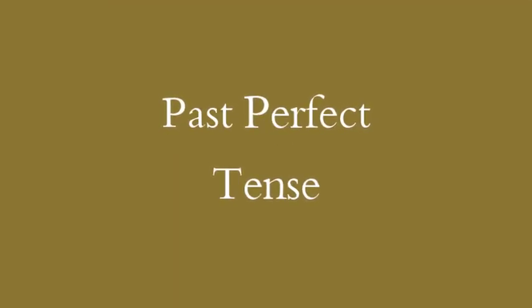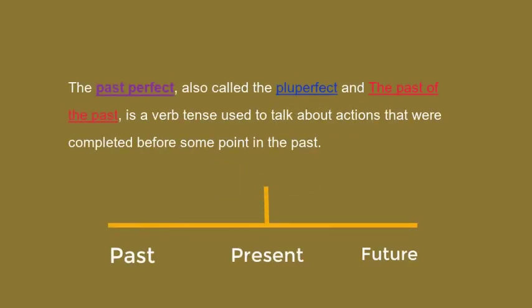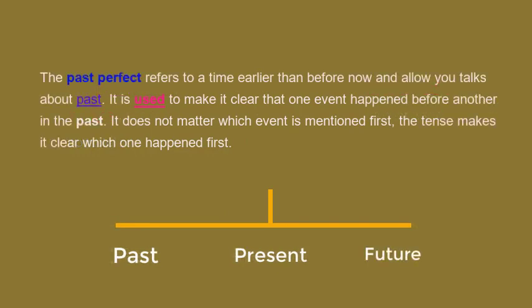Hello. The grammar lesson for today is past perfect tense. The past perfect, also called the pluperfect and the past of the past, is a verb tense used to talk about actions that were completed before some point in the past. The past perfect refers to a time earlier than before now. When talking about the past, it is used to make it clear that one event happened before another in the past.